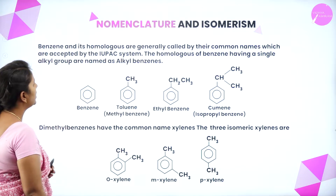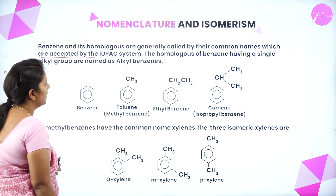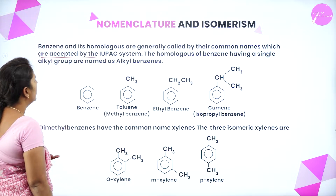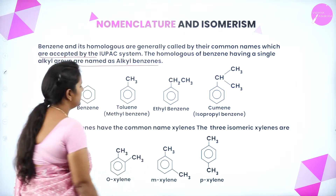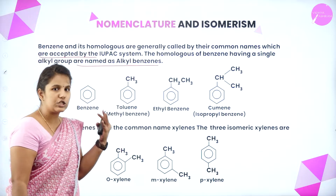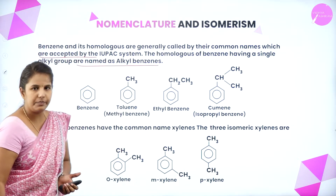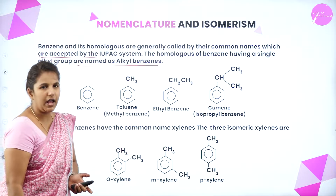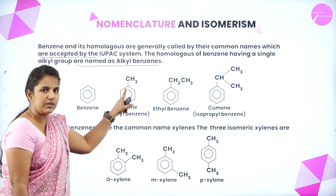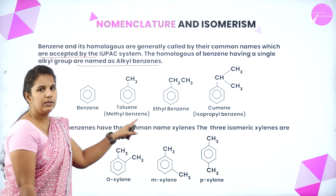Benzene and its homologues are generally called by common names accepted by the IUPAC system. The homologues of benzene having a single alkyl group are named as alkyl benzenes. While naming aromatic hydrocarbons, if any alkyl groups are attached to the benzene ring, we name the alkyl group first, followed by benzene. So, if a methyl group is attached to benzene, it is named methyl benzene.